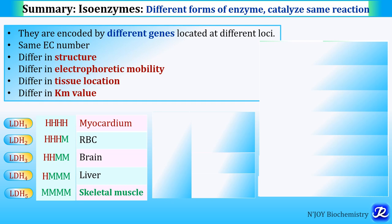Creatine kinase has 3 isoenzymes: CKBB (CK1), CKMB (CK2), and CKMM (CK3). It is a dimer with B (brain) and M (muscle) subunits.